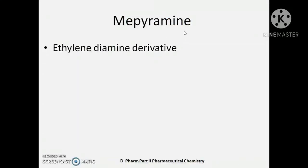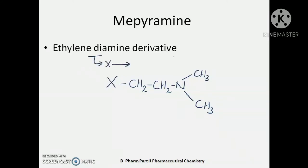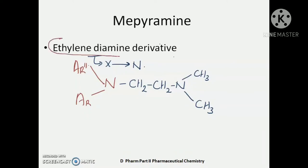To begin with, we will see the first one: Mepyramine. Mepyramine is an ethylenediamine derivative. We have seen in the previous video the general structure of all antihistamines. They have a common terminal portion: CH2-CH2-N(CH3)2. In this case, the connecting atom is nitrogen, so you have two nitrogen atoms — it is a diamine. Two nitrogen atoms are connected by CH2-CH2, giving you ethylenediamine. Two aromatic rings are attached to the nitrogen atom, making it an ethylenediamine derivative.